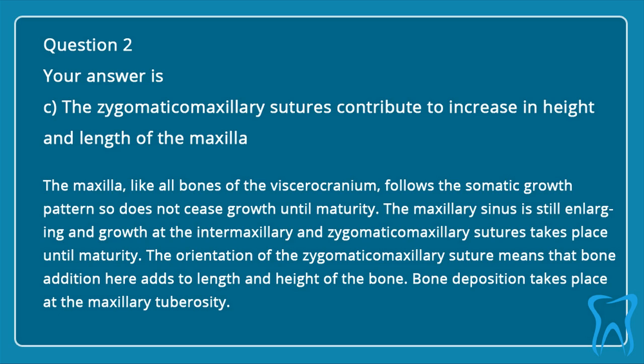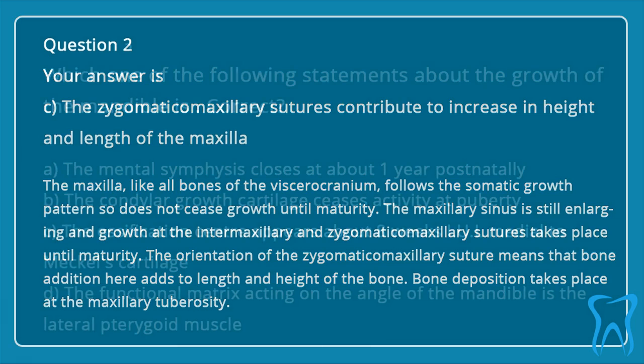The maxilla, like all bones of the viscerocranium, follows the somatic growth pattern and does not cease growth until maturity. The maxillary sinus is still enlarging and growth at the intermaxillary and zygomaticomaxillary sutures takes place until maturity. The orientation of the zygomaticomaxillary suture means that bone addition here adds to the length and height of the bone. Bone deposition takes place at the maxillary tuberosity.